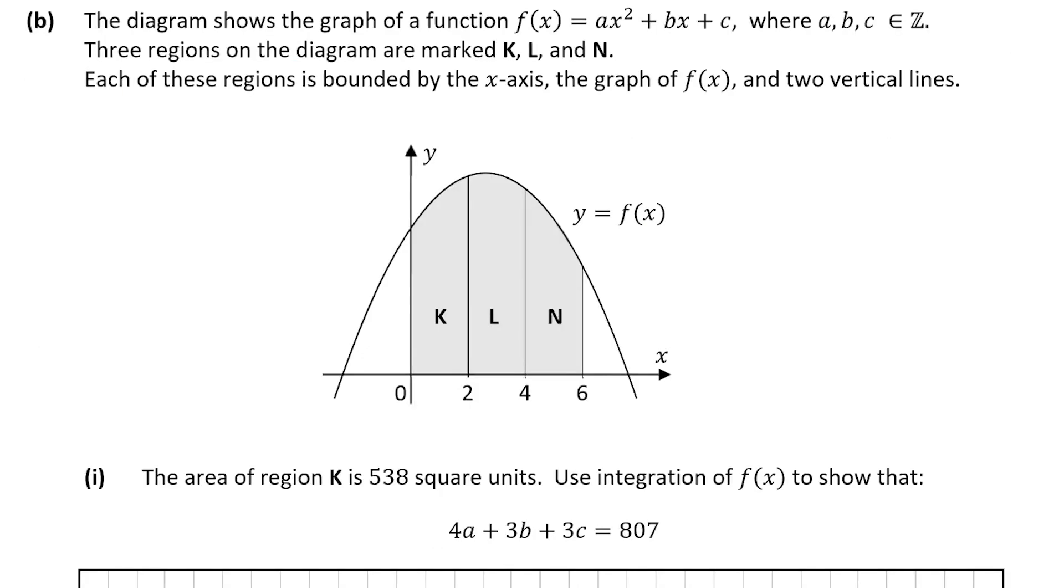Question B tells us the diagram shows a function f(x) = Ax² + Bx + C, and you can see it's not telling us what the values for A, B and C are. It tells us three regions on the diagram are marked, so you have K, L and N. Each of these regions are bounded by the x-axis, the graph of f(x), which is this curve here, and two vertical lines.